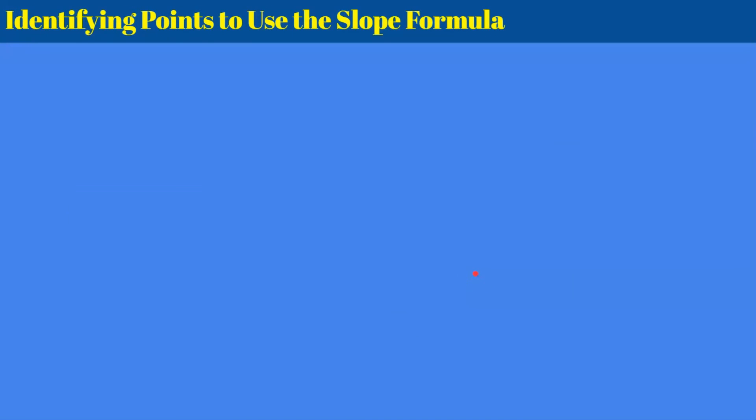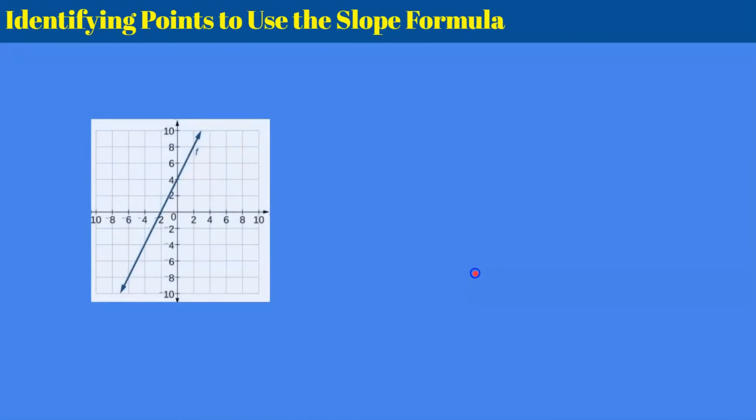All right two more things I want to leave you with. Maybe you're given a graph like this and you're not sure about using rise over run. Remembering that you can pick any two points on the line. I could identify this is point 1 and this is point 2 and I could use the slope formula.